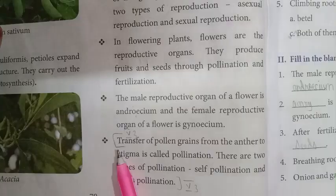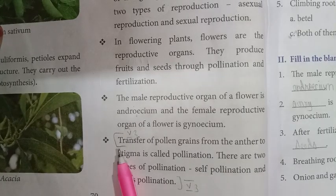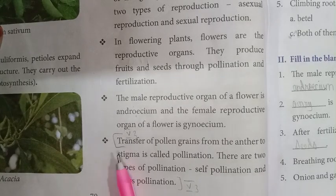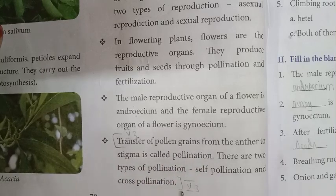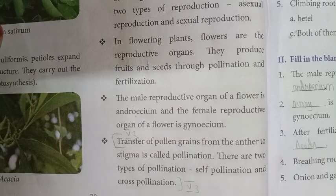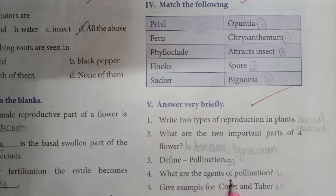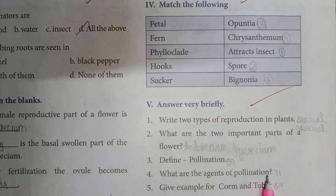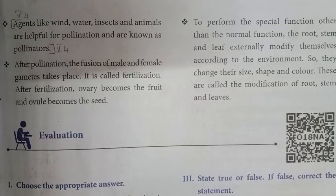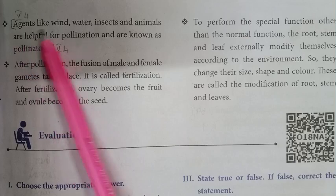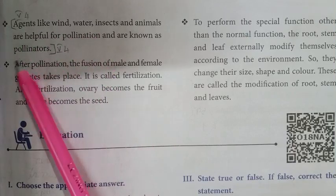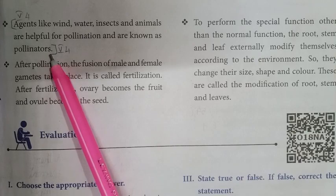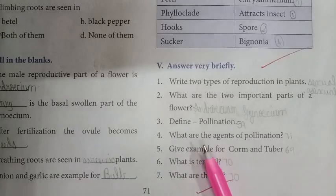Next question: Define pollination. Refer to page number 70, Points to Remember, fourth point — 'Transfer of pollen grains.' Start from there up to the last line covering cross pollination, and mark that. Next question: What are the agents of pollination? Refer to page number 71, left side, first point — agents like wind, water. Start from there up to the third line covering pollinators, and mark that.